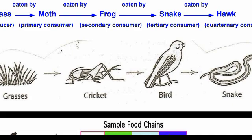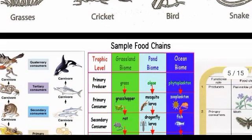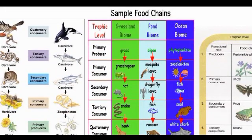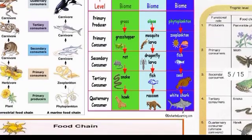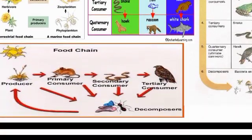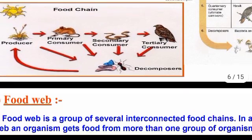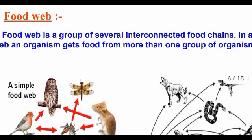A food chain can be lengthy or short. Next concept is food web.